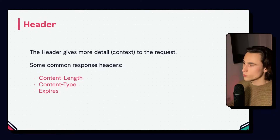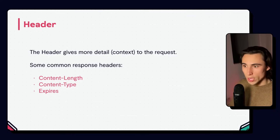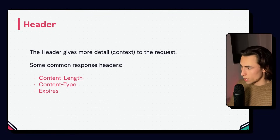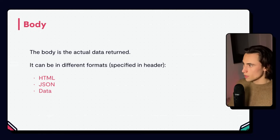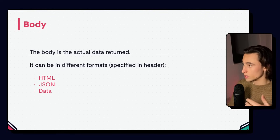The same way we included a header in the request, the application is going to send a header in the response, giving more context or detail. Some common response headers include how long is the content, what type of content is it, or when does this content expire — so how long will you have access to it. Finally, sometimes we're going to have a body. The body is the actual data being returned. It can be in many different formats: it can be HTML if we're browsing the web, it can be JSON, or it can be any other form of data, for example binary data.